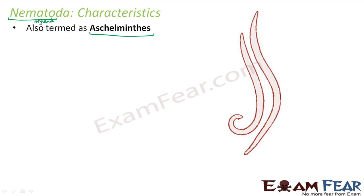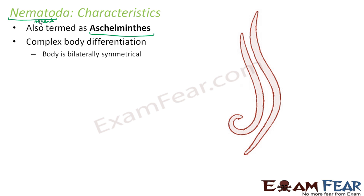Let us look at some of the important characteristics of nematodes. A large number of species exist — almost around 15,000 species. They have complex body differentiation. Body is bilaterally symmetrical, meaning if you divide it, you will get two equivalent right and left halves. The body is made up of three layers of cells, that is triploblastic.